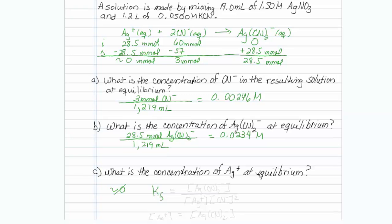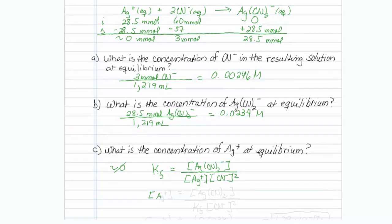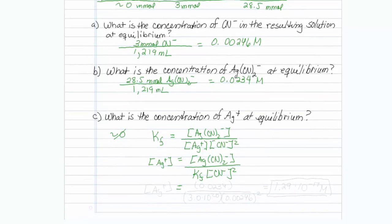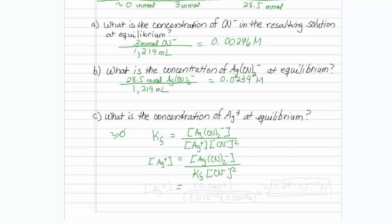We do know that our KF is equal to the concentration of our silver complex over our concentration of silver ion times cyanide ion squared. So I think I could probably rearrange this and say that the silver ion concentration is equal to the complex concentration divided by KF times the cyanide concentration squared.